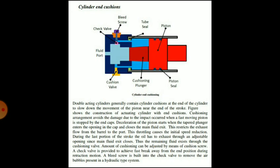Cylinder end cushions: double acting cylinders generally contain cylinder cushions at the end to slow down the movement of the piston near the end of the stroke. The cushioning arrangement avoids damage due to impact when a fast-moving piston is stopped by the end caps. In the diagram, you can see the piston and at the back side of the piston there is a cushioning plunger.